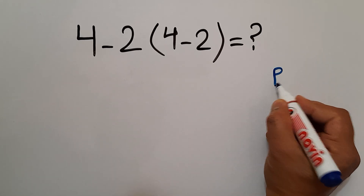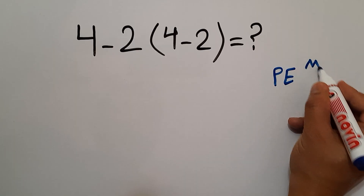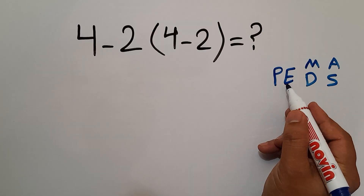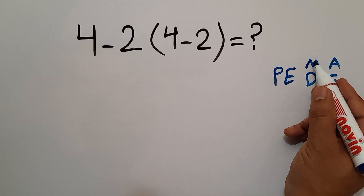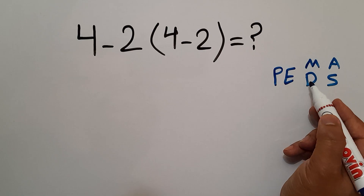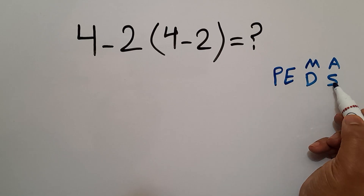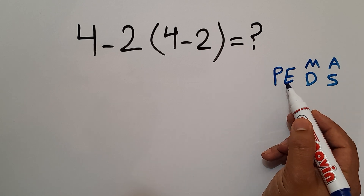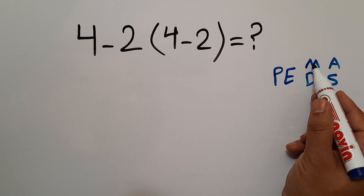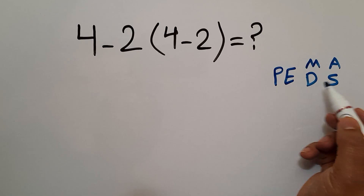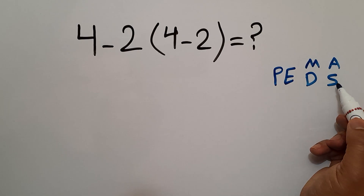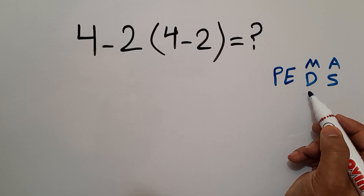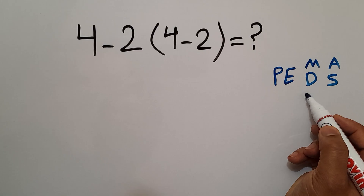The order of operations is PEMDAS: P stands for parentheses, E stands for exponents, M and D stand for multiplication and division, and A and S stand for addition and subtraction. We first do parentheses, then exponents, then multiplication or division, and finally addition or subtraction. Remember that multiplication and division have equal priority and we work from left to right.